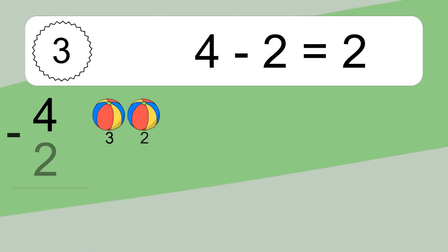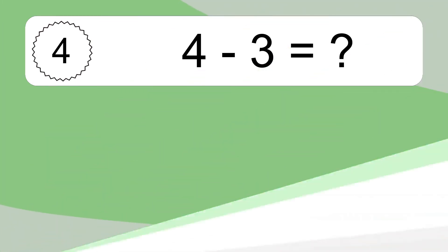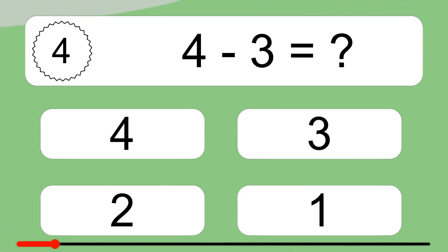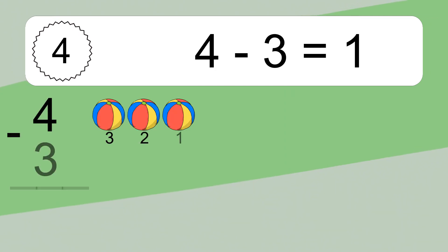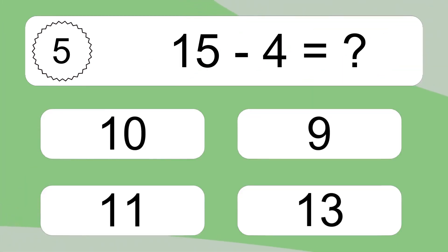4 minus 2 equals 2. Let's count it: 3, 2. 4 minus 3 equals what? 4 minus 3 equals 1. Let's count it: 3, 2, 1.